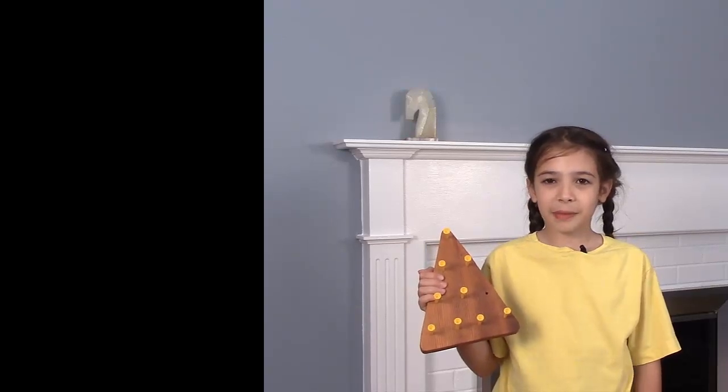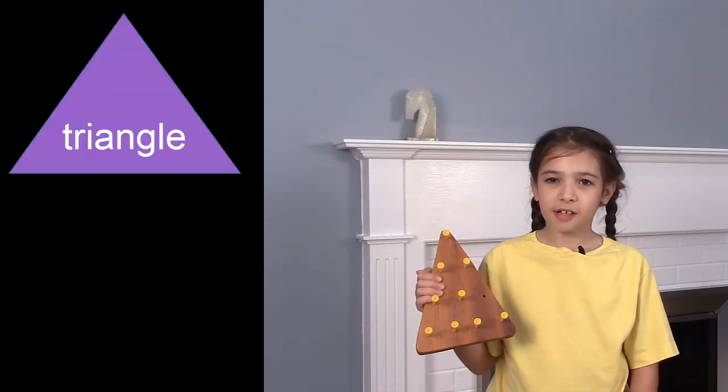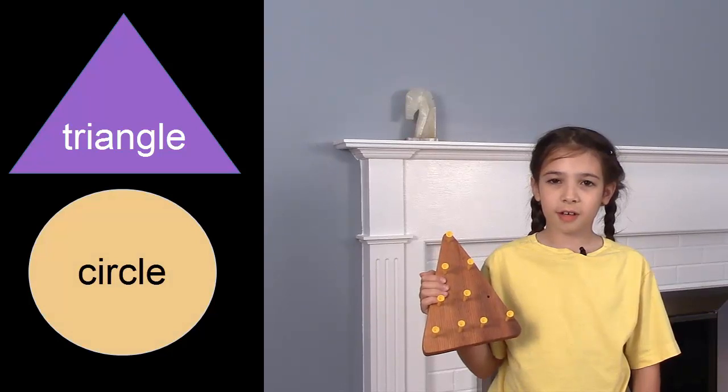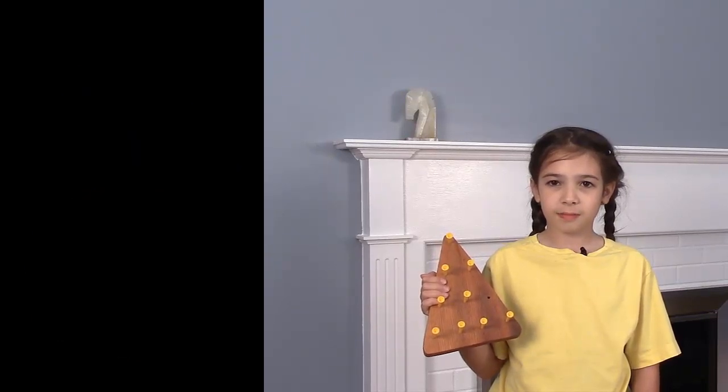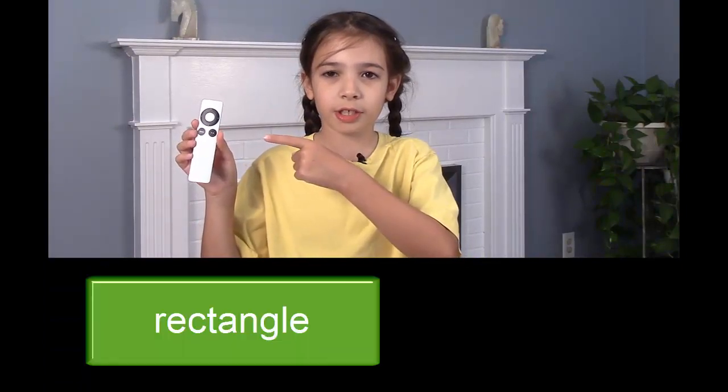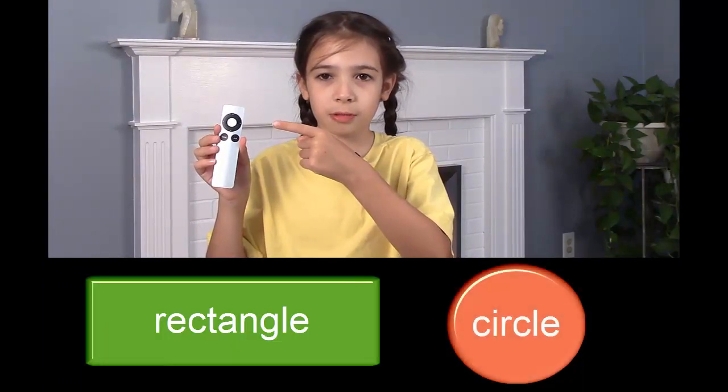This is a game. The board is a triangle. The pegs are like circles, and the holes are circles. This remote control is shaped like a rectangle. The buttons are circles.